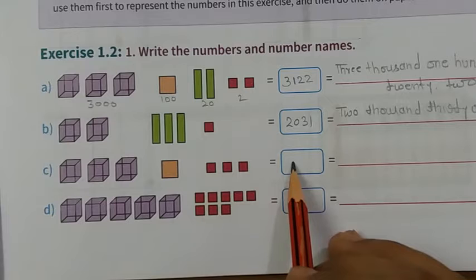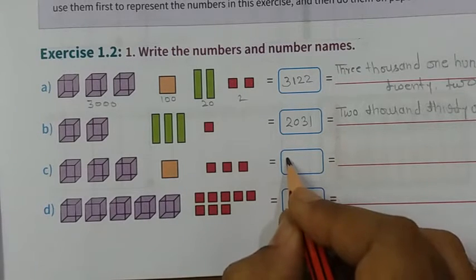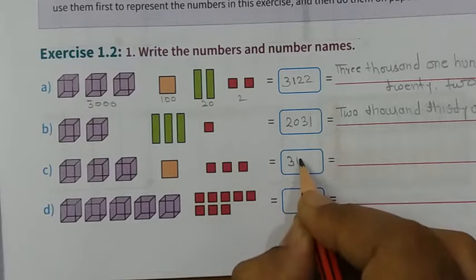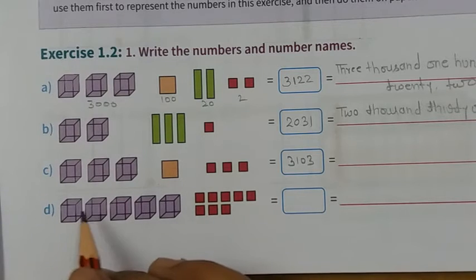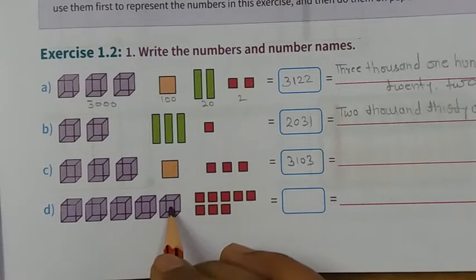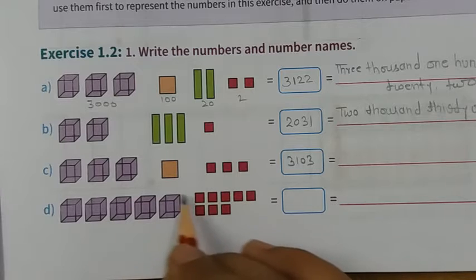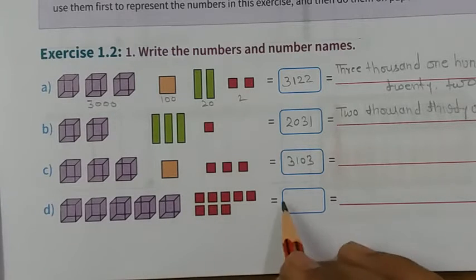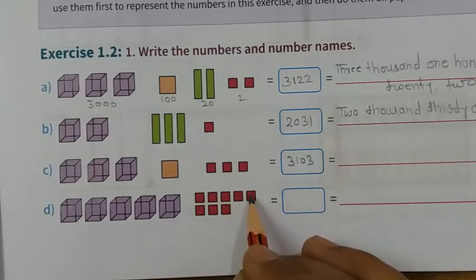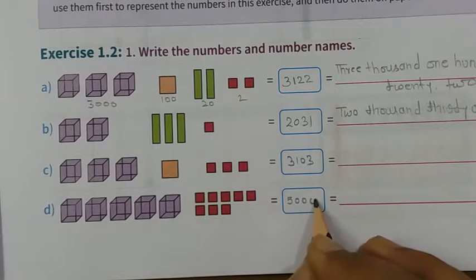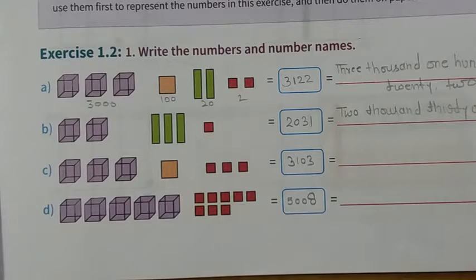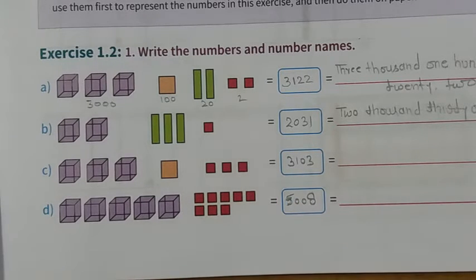Same as you can solve section C and D part. 3103. Now 1000, 2000, 3000, 4000, 5000. And there is no hundred and tens number. So 1, 2, 3, 4, 5, 6, 7, 8 equals 5008. You can write here 5008. Its name is five thousand eight. Is it clear everyone?